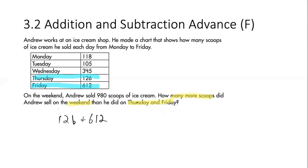So together, on Thursday and Friday, we have 6 plus 2, that is 8. 2 plus 1, that is 3. 6 plus 1, that is 7.